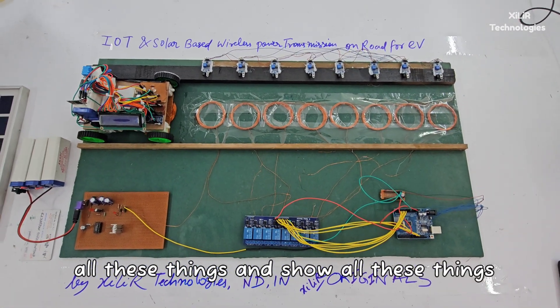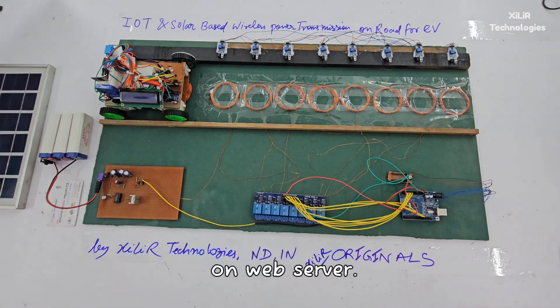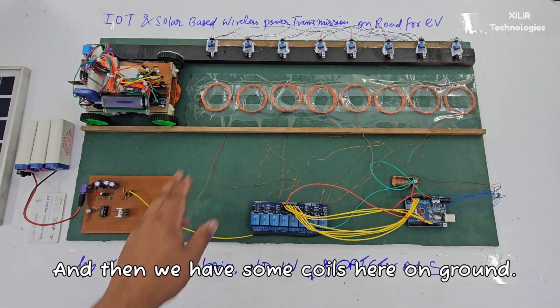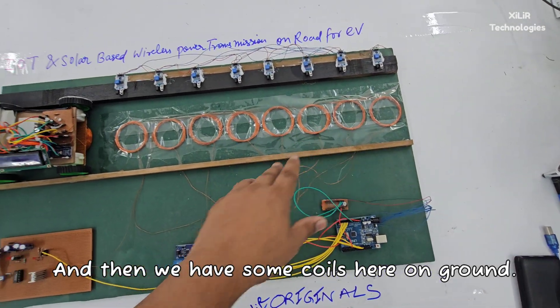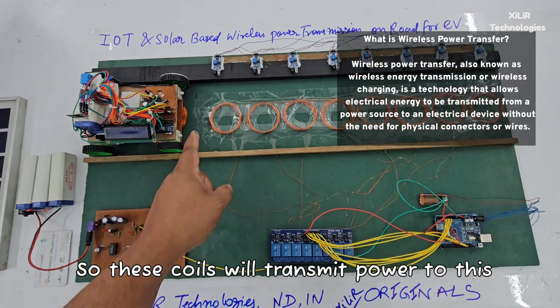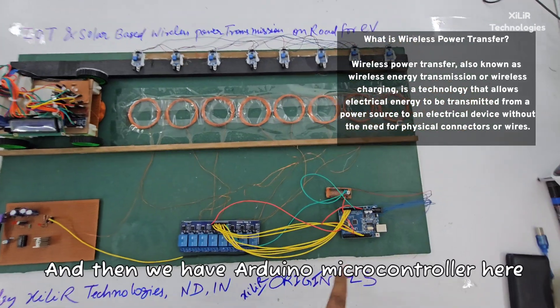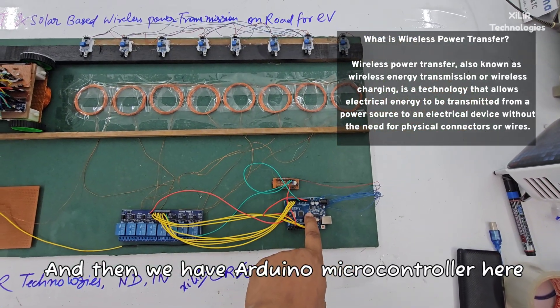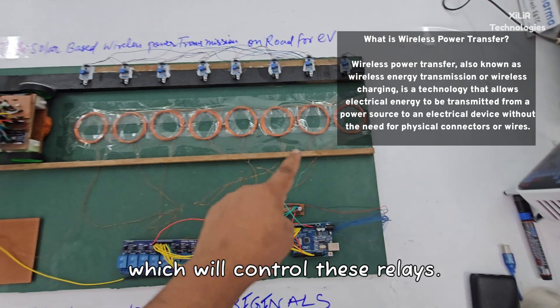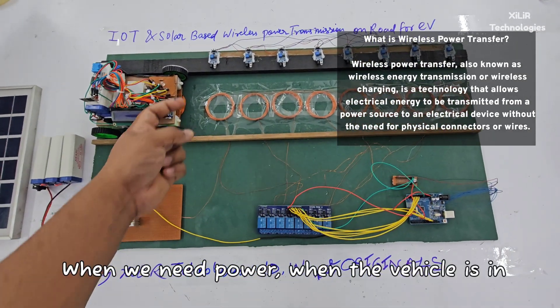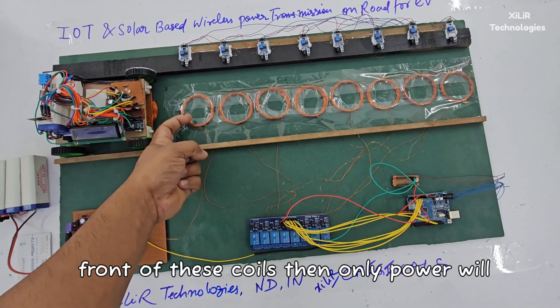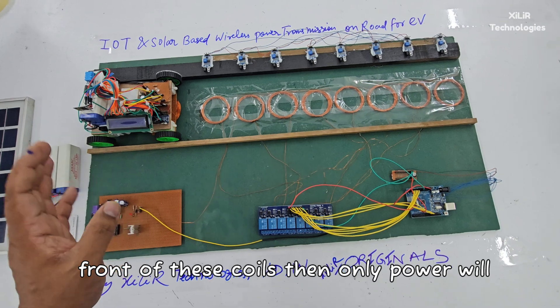We have some coils here on the ground. These coils will transmit power to this receiver coil using these relay modules. Then we have an Arduino microcontroller here which will control these relays. When the vehicle is in front of these coils, then only power will be transmitted.